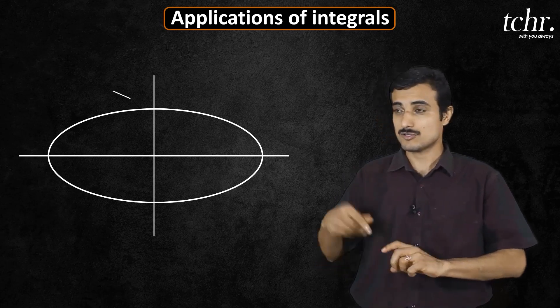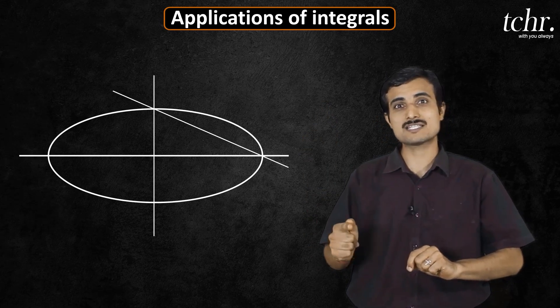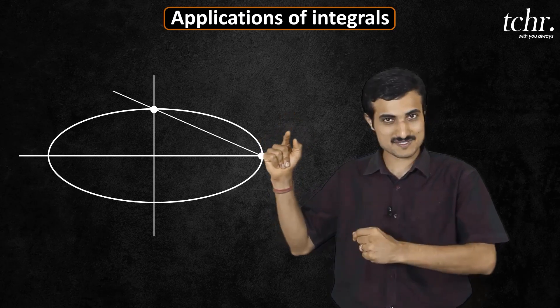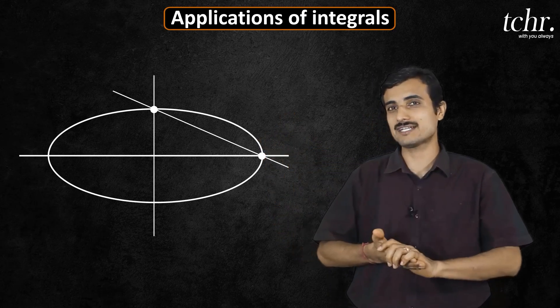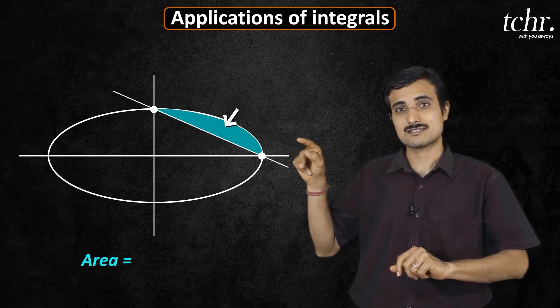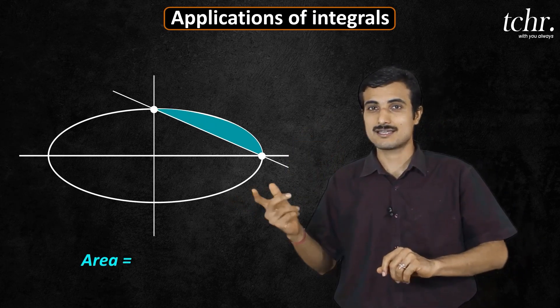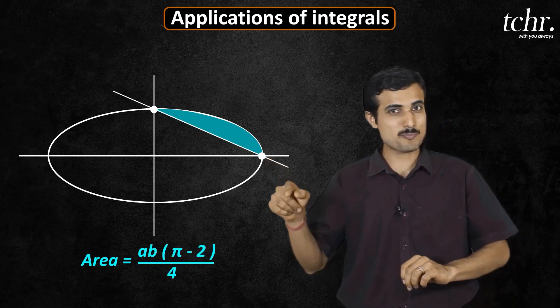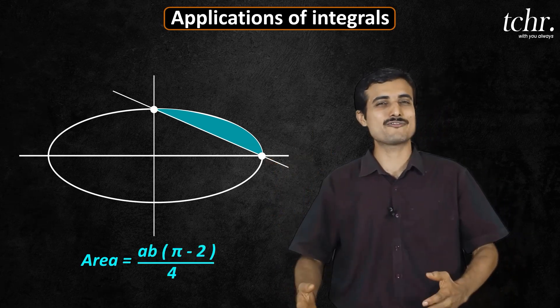In case you know the chord is passing through two vertices of ellipse, then how do you find the area between the chord and ellipse? Very simple shortcut: a b into pi minus 2 divided by 4.